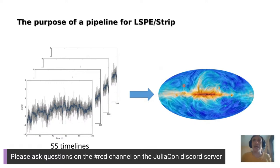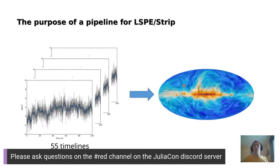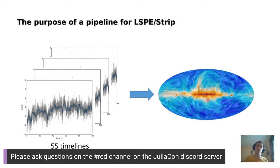We wanted to build a simulation pipeline that simulates data acquisition. To simulate it, one must produce 55 timelines — one for each receiver — each lasting two years. Then you need to flag them, calibrate them, and most importantly combine all of them to produce a sky map of a polarized signal. This map shown on the right is produced by the Planck Collaboration; Strip will observe just one-third of the whole sky.